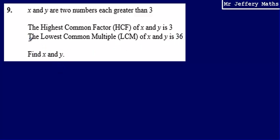Now in order to answer this, the first thing I'm going to take a look at is the lowest common multiple. The lowest common multiple being 36 means that x and y must be factors of 36.